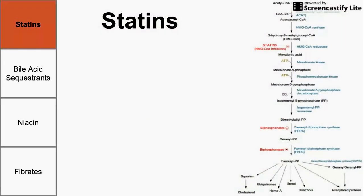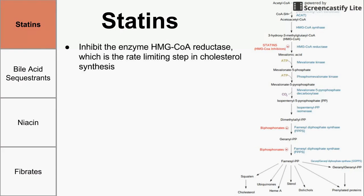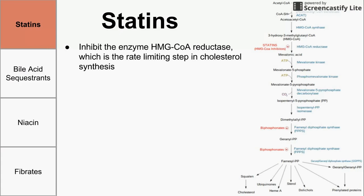Let's start with statins, a very commonly used class of drugs. Statins work by inhibiting the enzyme HMG-CoA reductase. This enzyme is the rate-limiting step in cholesterol synthesis. Cholesterol synthesis is shown on the right — it's a long pathway. You can see HMG-CoA reductase as the third enzyme where the pointer is. It's the rate-limiting step, and statins inhibit that step. If you inhibit the rate-limiting step, that's your best shot at inhibiting cholesterol production in the body.